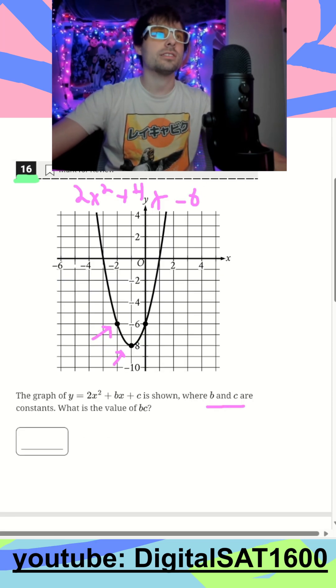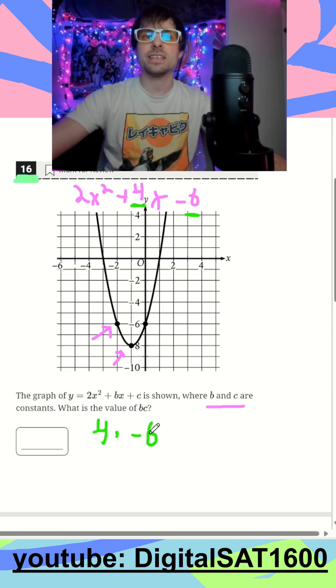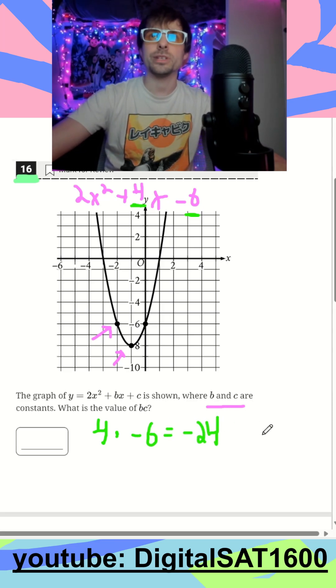So they want us to find what b and c are and what is the value of b times c. So I can see that my b value is 4. My c value is negative 6. So b times c or 4 times negative 6 is going to get us negative 24. Super easy to do in Desmos.